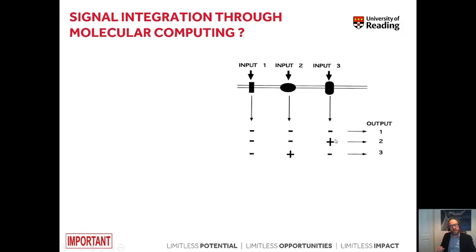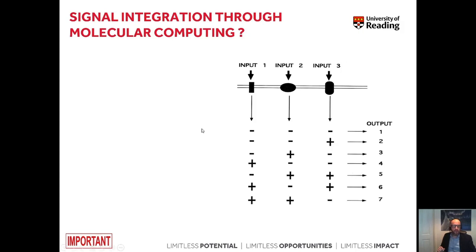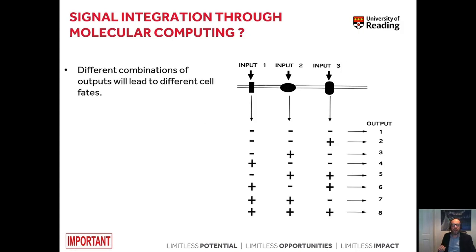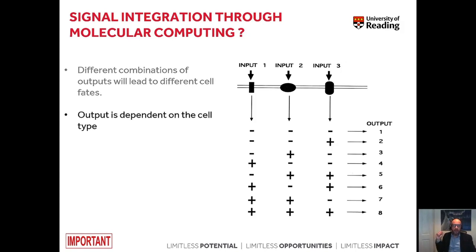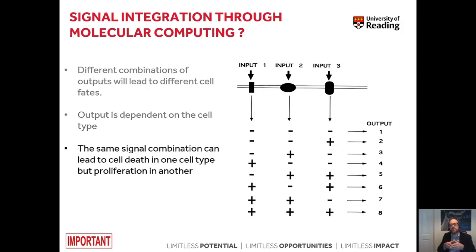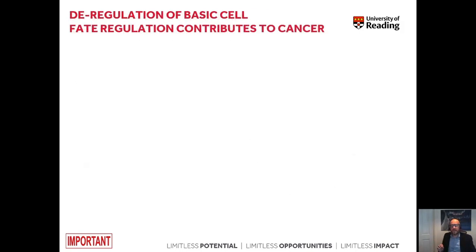If signal number three is absent but signal number two is present, we would have a very different output. We could have different combinations of those signals, and all of those different combinations need to be processed in the nucleus. Different combinations of ligands binding to different receptors will lead to a very different cell fate. The output is also partly dependent on the cell type receiving the combination of signals — the same signal combination can lead to cell death in one cell type but proliferation in another.